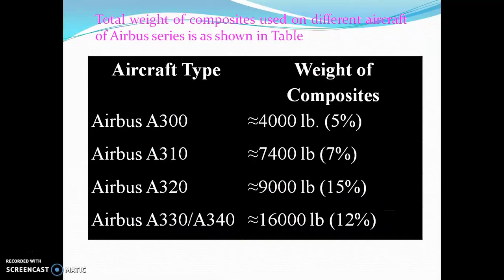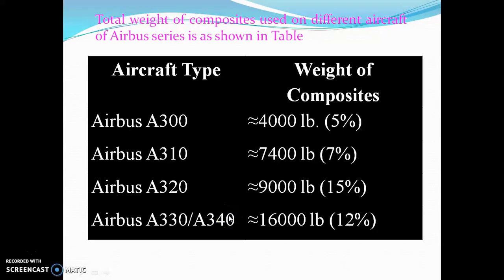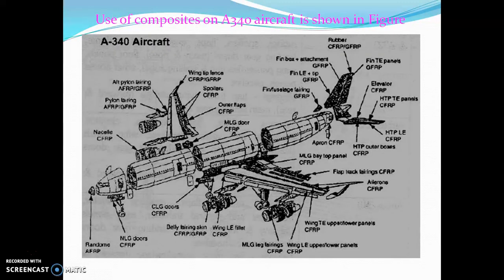A major benefit of using composite materials is that weight can be significantly reduced. For the Airbus A300, composites account for 5% of structural weight; the A310 is 7%; the A320 is 15%; and the Airbus A340 is 12%. The use of composites on the Airbus A350 also includes doors and carbon fiber reinforced components.